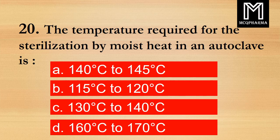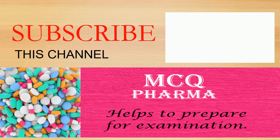Question number 20. The temperature required for sterilization by moist heat in an autoclave is? Option A: 140 to 145 degree Celsius. B: 115 to 120 degree Celsius. C: 130 to 140 degree Celsius. D: 160 to 170 degree Celsius. Correct answer: Option B, 115 to 120 degree Celsius. If you like this video, please like, share and subscribe this channel.